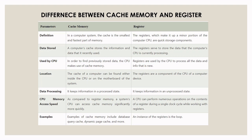Cache memory used by CPU: in order to find previously stored data, the CPU makes use of cache memory. Register used by CPU: registers are used by the CPU to process all data and instructions that are new. Location of cache memory: the cache of a computer can be found either inside the CPU or on the motherboard of the system. Location of register: registers are components of the CPU of a computer device. Cache memory data processing: it keeps information in a processed state. Register data processing: it keeps information in an unprocessed state.